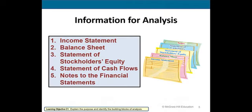Information for analysis: the places we find the information in order to make the analysis. We use our general purpose financial statements. Those include the income statement, the balance sheet, the statement of stockholders' equity or the statement of retained earnings, the statement of cash flows, and any notes that would have been attached to these reports that give us more information that we need.